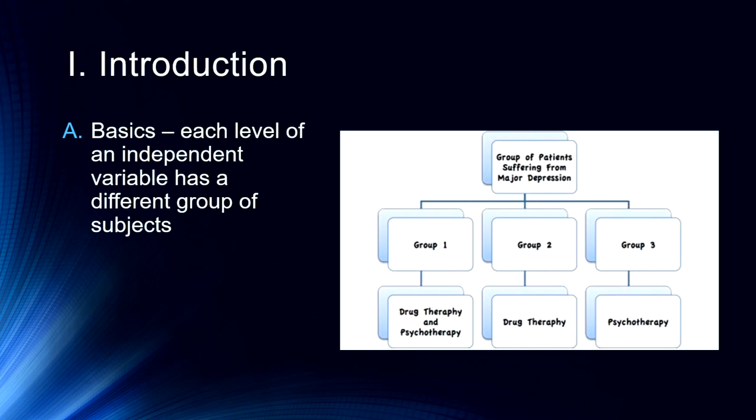Technically that might be a mixed kind of design because now we sort of have combined two of our independent variables, but essentially type of therapy is our independent variable, so we're not going to be too nitpicky about it. In this case we have three groups assigned to three different conditions, so type of therapy I guess would be our independent variable. This is a relatively simple version of this.